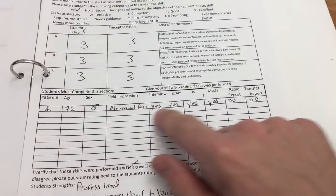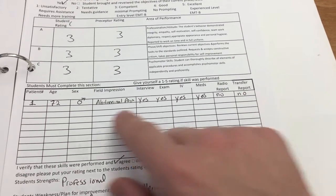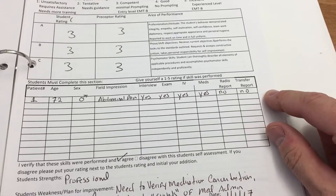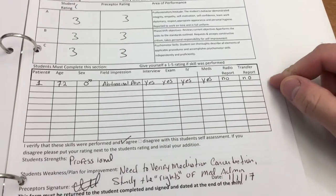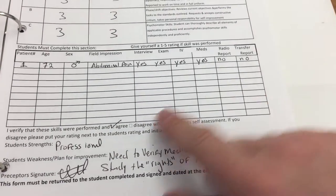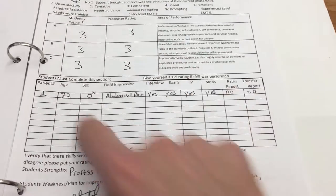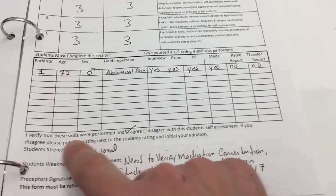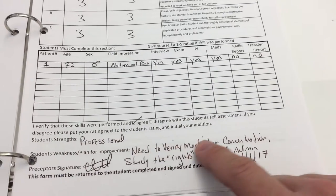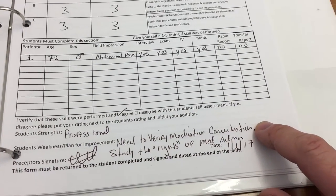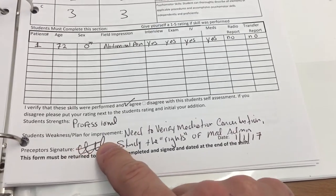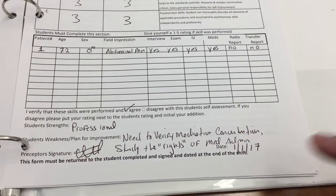The patients that you had contact with will be here. And this is just some really basic information on the patients. And then the preceptor will check agree or disagree that you actually had this experience here. And then your preceptor will write any strengths, any areas they'd like to see improved in a plan. And then the preceptor will sign it and date it.